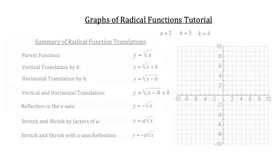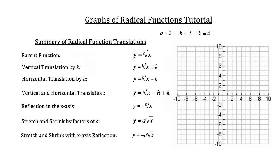Here's a summary list of the radical function translations that could occur. We're going to keep using our a, h, and k values from before. We've already identified what the parent function looks like: y is equal to the square root of x, where z equals 2. I'll plot that on the graph again. There's the parent function — I'm going to box it so you can see what each of these translations actually does to the graph.